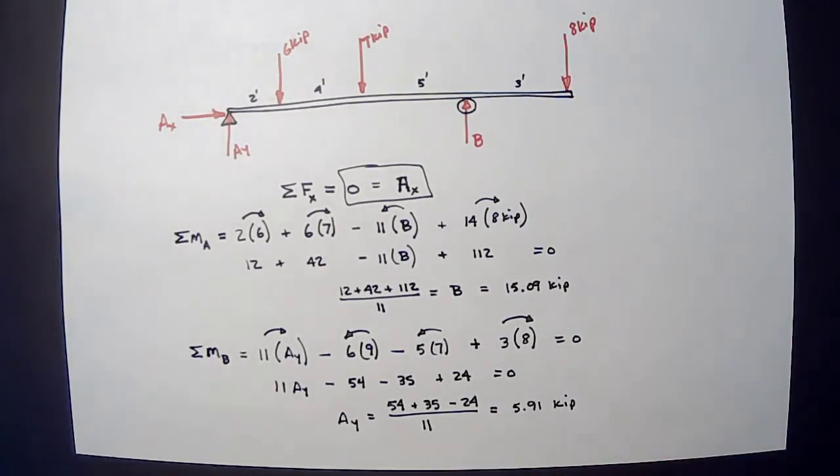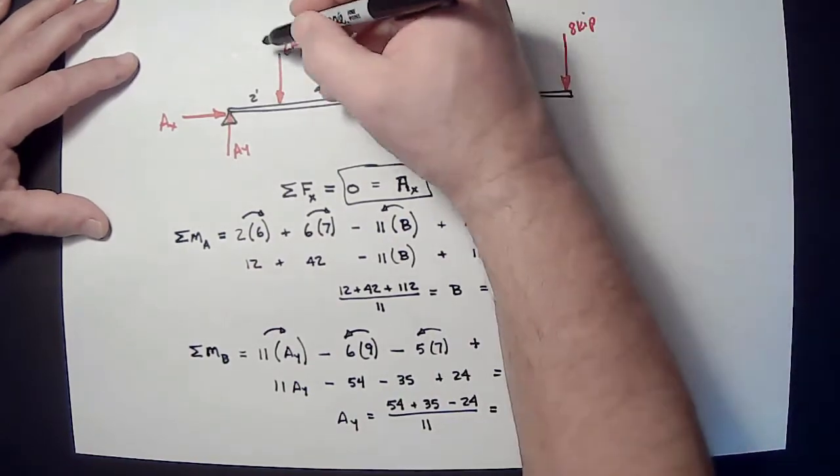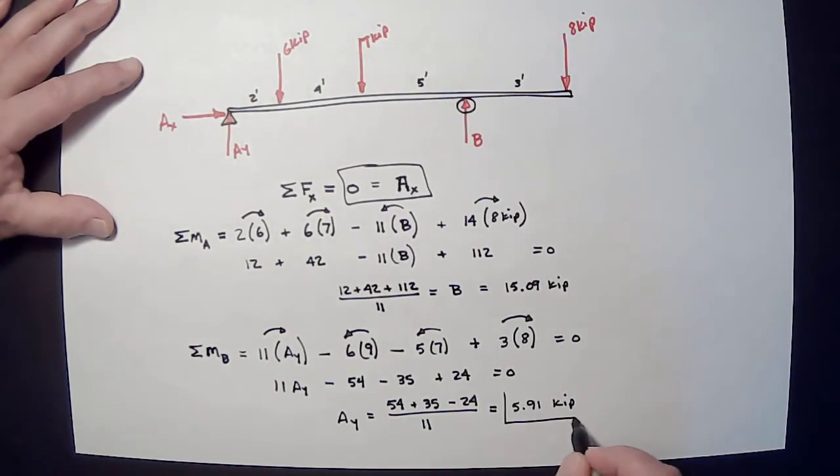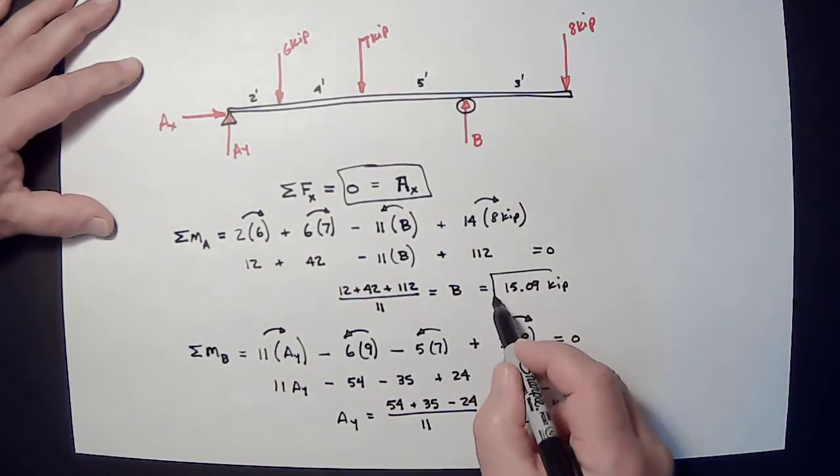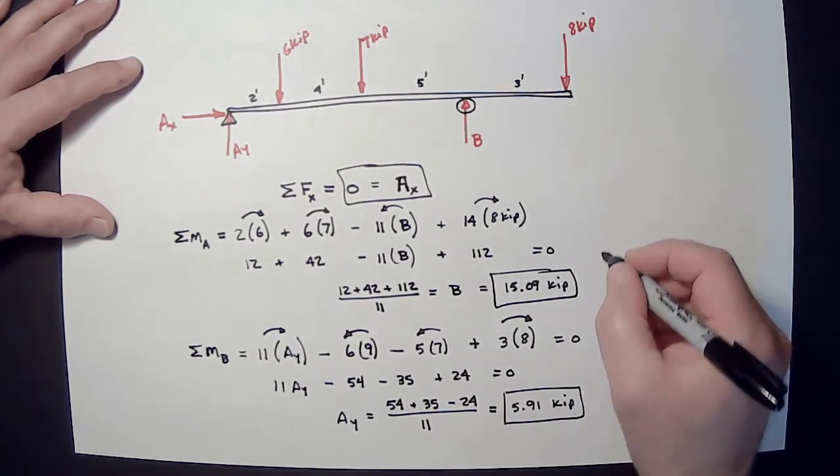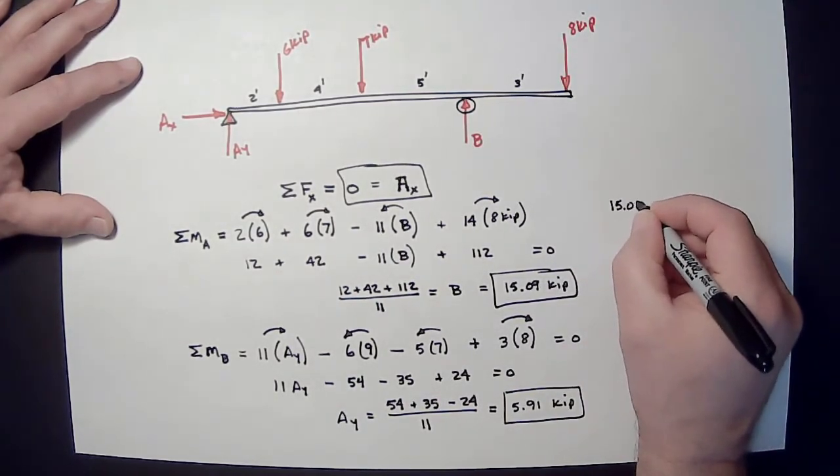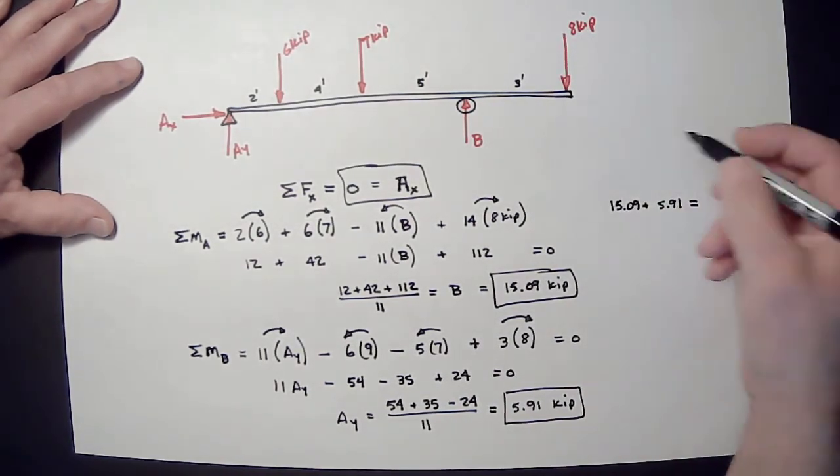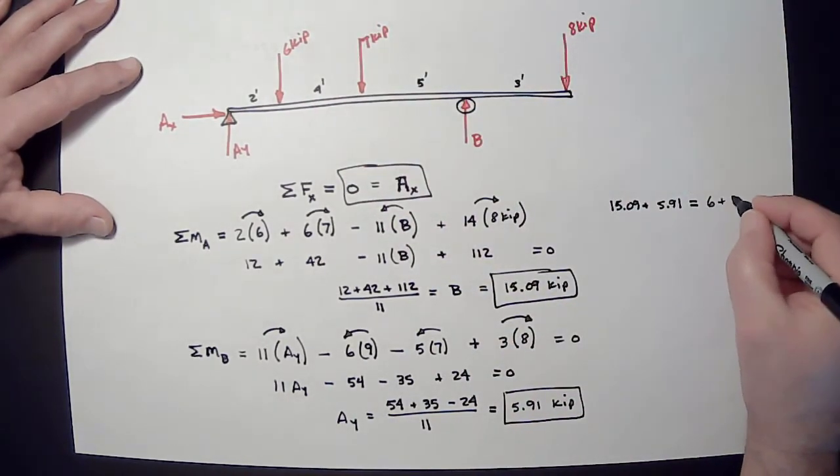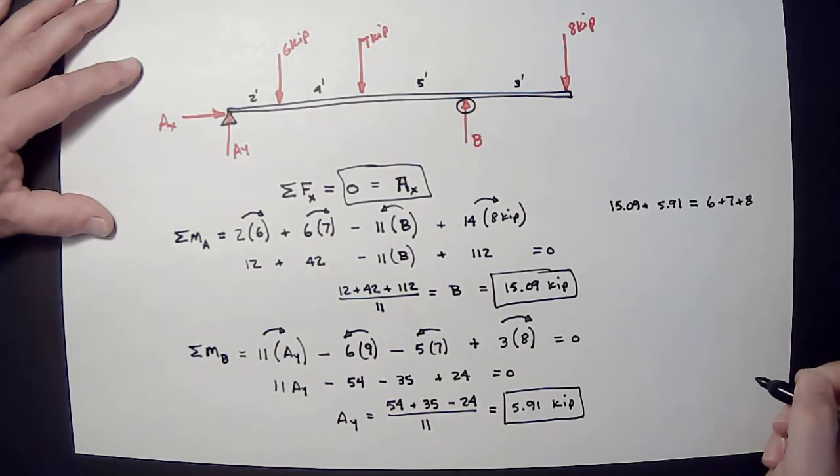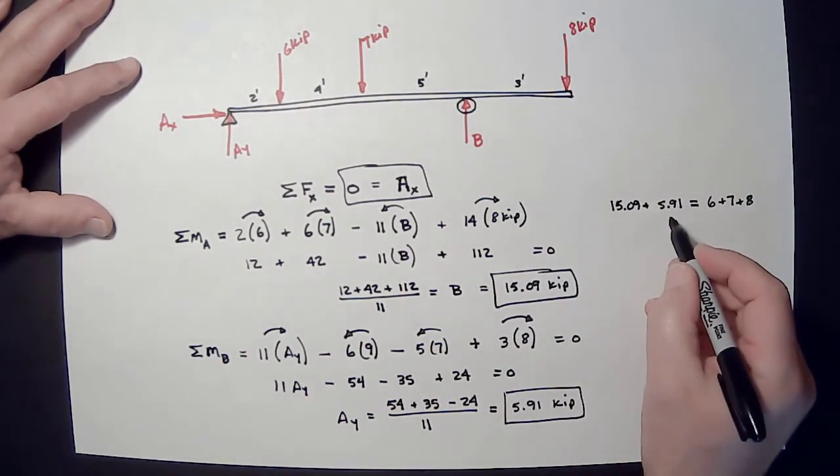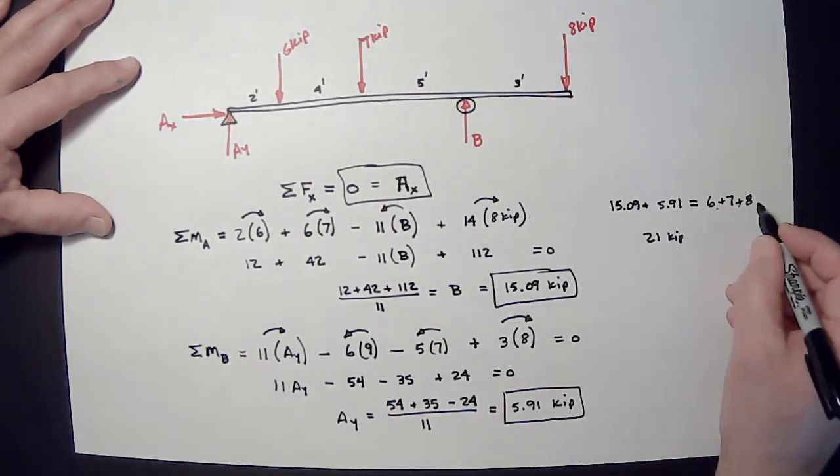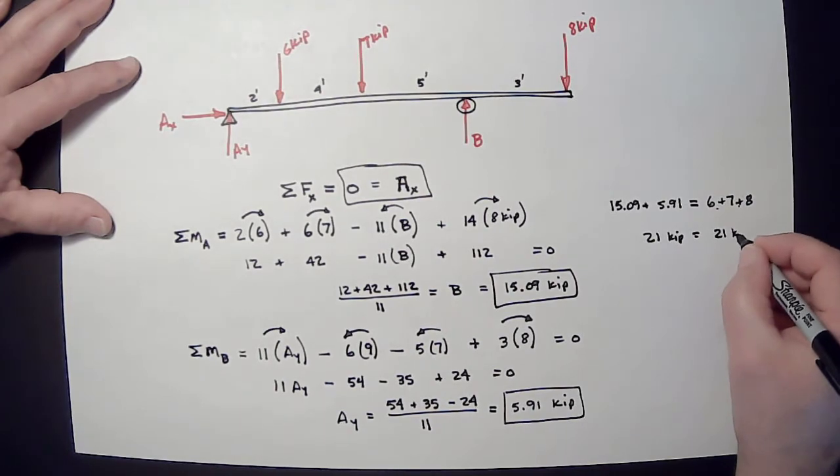Now, as a check, everything going down has to equal everything going up. So, the two things going up are 15.09 plus 5.91. And they have to equal 6 plus 7 plus 8. If I add these two, they add up to 21 kips. If I add 6 and 7 and 8, they add up to 21 kips.